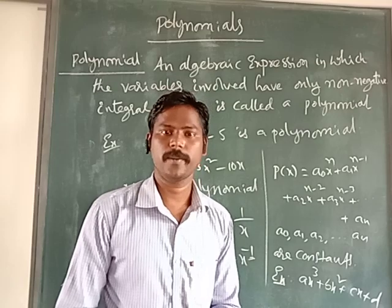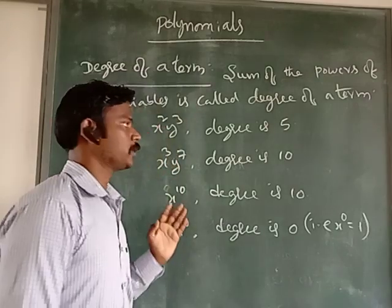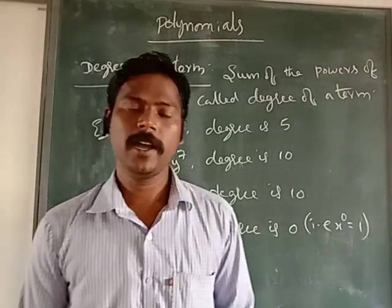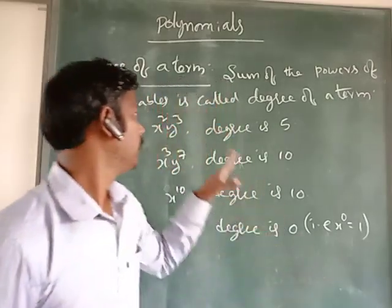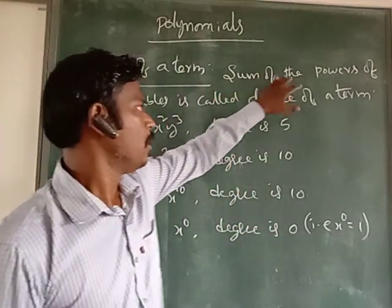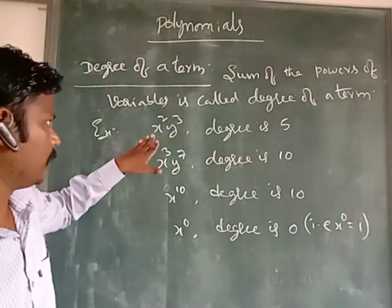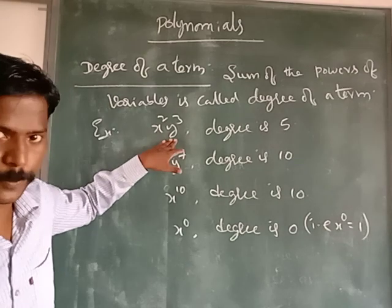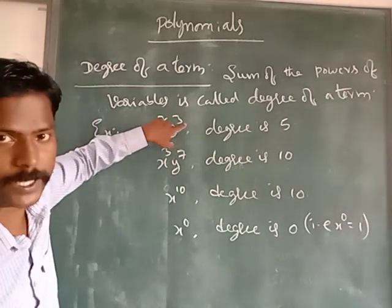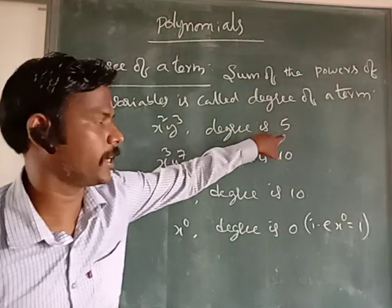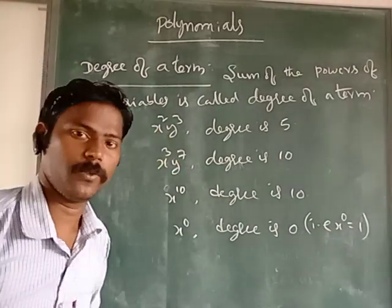Next, we go to the degree of a term. An algebraic expression or polynomial contains different terms. The degree of a term means the sum of the powers of the variables in that term. For example, x²y³ — x has power 2, y has power 3, add together: 2 + 3 = 5. So the degree of the term x²y³ is 5.